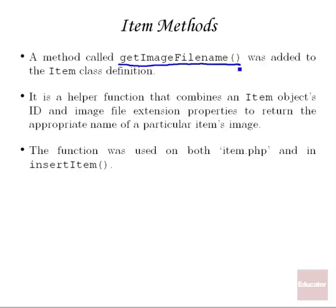It's similar to when we talked about the GetFullName method in our last lesson, which was able to get the full name of a person object by combining the first name and last name into one method — so every time you want the full name of a person, you don't have to access two separate properties, you can just call one method.